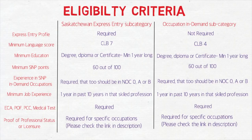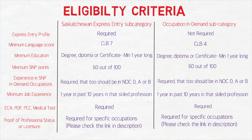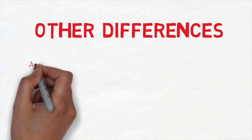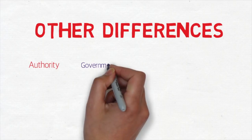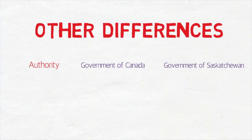The minimum job experience required is one year in the past ten years in a particular skilled profession. Also, an ECA (Educational Credential Assessment), proof of funds, police clearance certificate, and medical test are all required for both subcategories. Proof of professional status or licensure is also required for both, but only for specific occupations — I'll provide a link to the occupations list in the description. One key difference: the authority for Express Entry is the Government of Canada, while for Occupation in Demand it is the provincial Government of Saskatchewan. Processing time is shorter for the Express Entry subcategory.